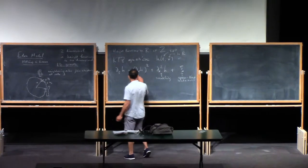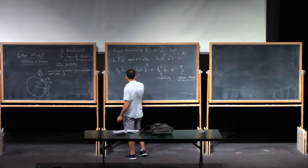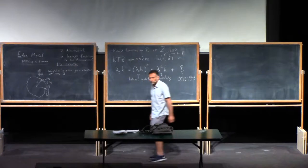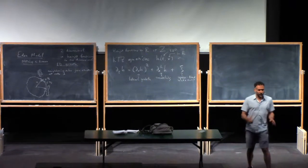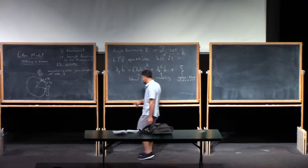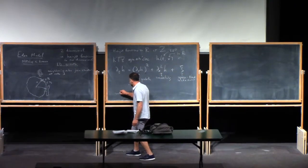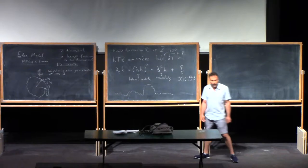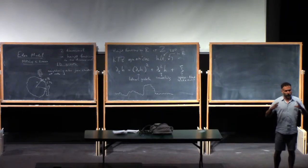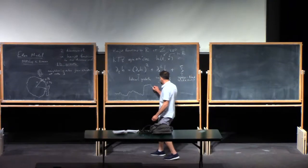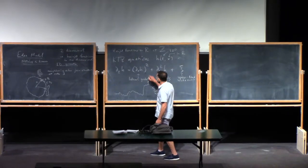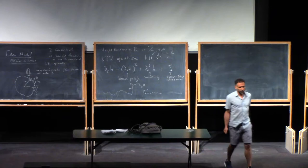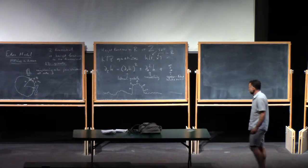The most interesting term is the nonlinearity — this is a lateral growth mechanism. What is lateral growth? The idea is that you should think of a surface growing randomly but outwards, in all directions at once, just like the Eden model. Think of particles coming down from the side and sticking to the surface.